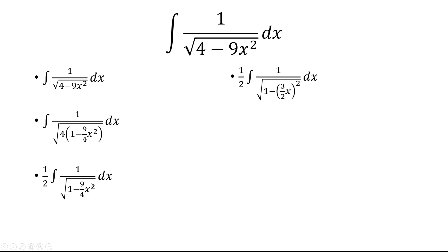And now we can rewrite 9 fourths x squared as just 3 halves x quantity squared.